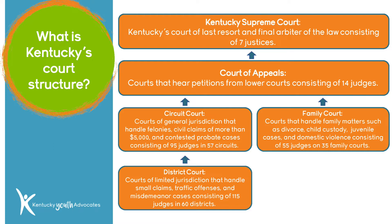Right above it is circuit court. These are courts of general jurisdiction that handle felonies, civil claims of more than $5,000, and contested probate cases consisting of 95 judges in 57 circuits. Parallel to that is family courts. These are courts that handle family matters such as divorce, child custody, juvenile cases, and domestic violence, consisting of 55 judges on just 35 family courts.